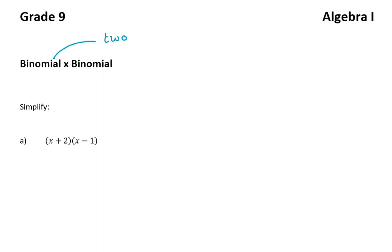A binomial is something that has two terms. So if you have a look at my very first question that says simplify, this entire question is one term, but inside that bracket there's two terms and inside that bracket there's two terms. So that's why it's called a binomial times a binomial.